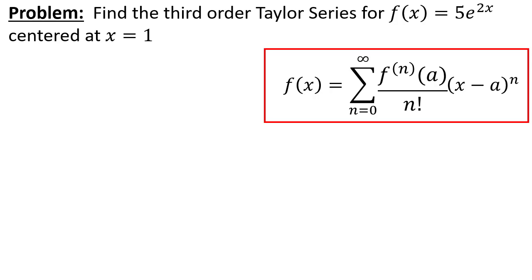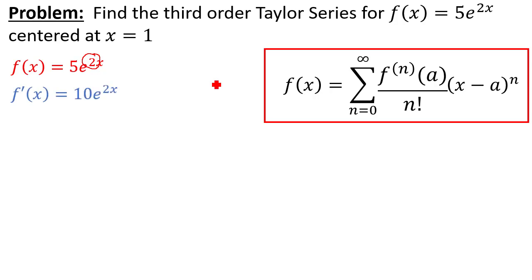The first thing we're going to want to do is just write down f of x. Now we're looking for the third order Taylor series, so the next thing we want to do is find the first three derivatives of this function. Using the chain rule we're going to multiply by two, so we get f prime of x equals ten e to the two x. Then our second derivative is twenty e to the two x — we multiply that constant by two again — and the third derivative we multiply that constant by two again.